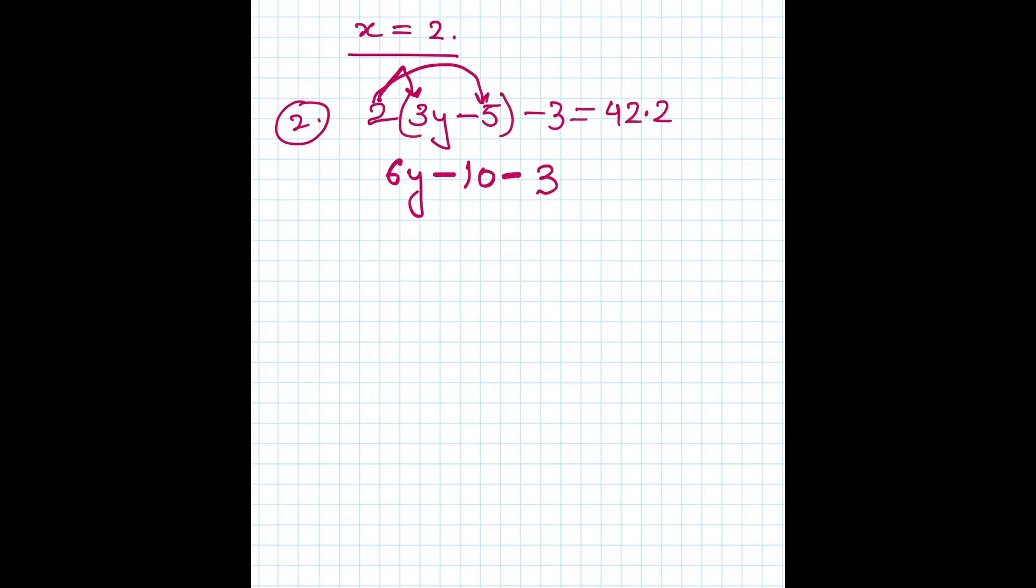Minus 3 equals 42.2. Again we can solve the numbers first on the left hand side, so we will do 6y minus 13 equals 42.2. Now we have to add 13 on both sides, so 13 minus 13 is 0.